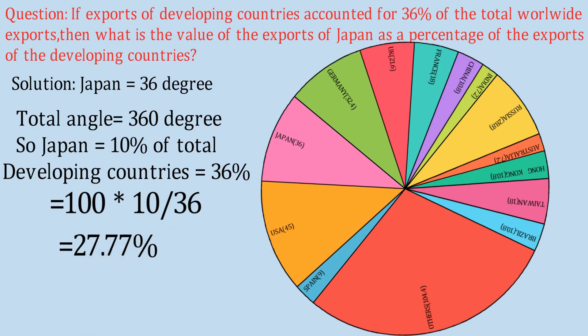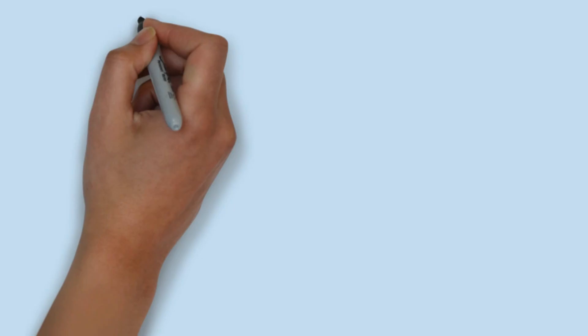Comparing Japan's share to the developing countries' share, we calculate 10 divided by 36 multiplied by 100, which gives 27.77 percent. This is a useful trick and methodology by which you can really shorten the time taken to solve the question, while also minimizing the probability of errors. I hope you appreciate and adopt this method.